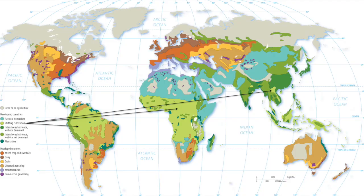A third agricultural area for us to look at is shifting cultivation. When we look at the map of the earth, shifting cultivation is the lime green areas generally found in tropical and rainforest regions. Shifting cultivation is also called slash and burn.